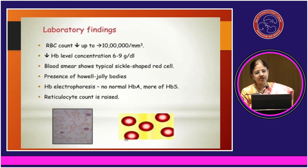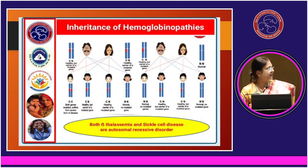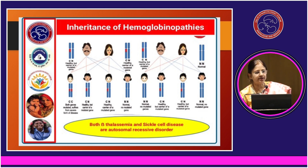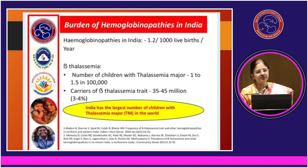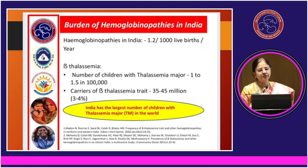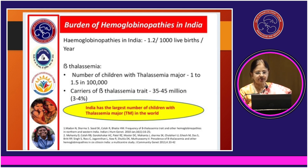All hemoglobinopathies are preventable. If we test the parents before birth, we can prevent the birth of a child with major problems. It is an autosomal recessive disorder — if a child gets both abnormal genes, the child has major disease. In India, we have around 1 to 1.5 per 100,000 children with beta thalassemia major, and it is our duty as obstetricians to prevent the birth of these thalassemia major children.